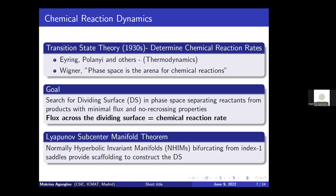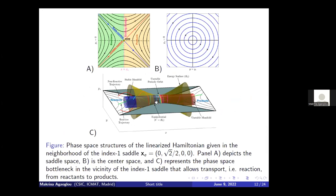Initial conditions inside these stable and unstable manifold tubes will cross the bottleneck in forward or backward time respectively, and can be catalogued as reacting, while trajectories outside the cylinders are non-reacting. Our goal in this work is to study transport in phase space between regions with qualitatively distinct dynamical behavior. The Hamiltonian we study has kinetic plus potential energy. The model parameter A is the barrier height for the x degree of freedom, and V represents the coupling strength between both degrees of freedom. The parameter delta represents the asymmetry in the double-well potential of the x degree of freedom.